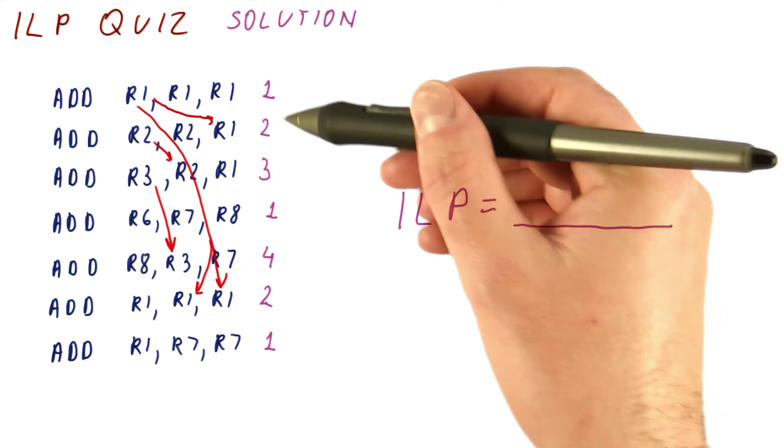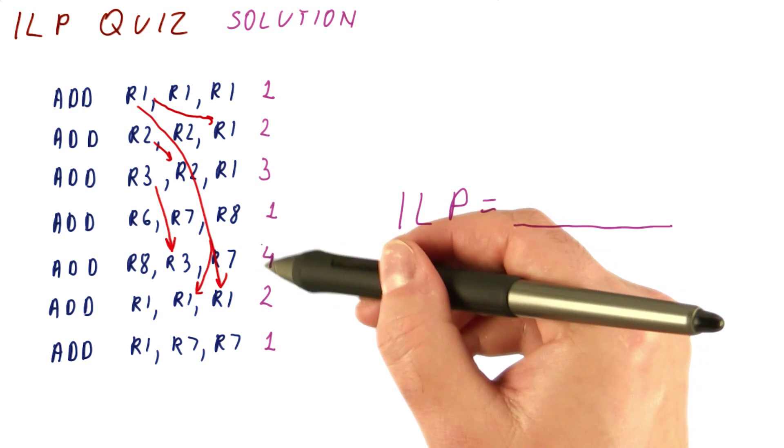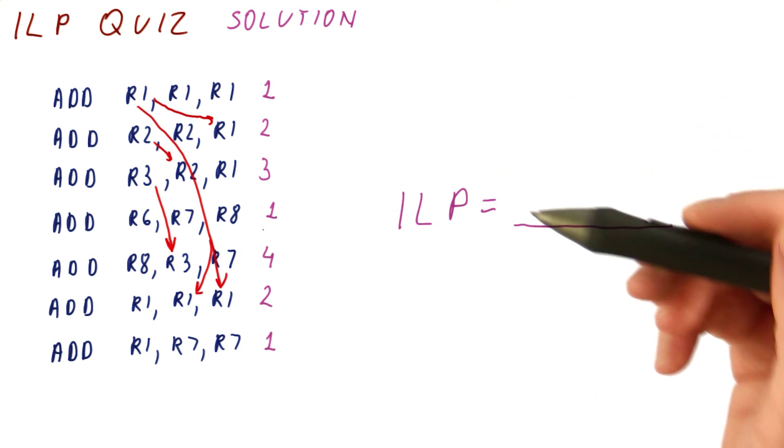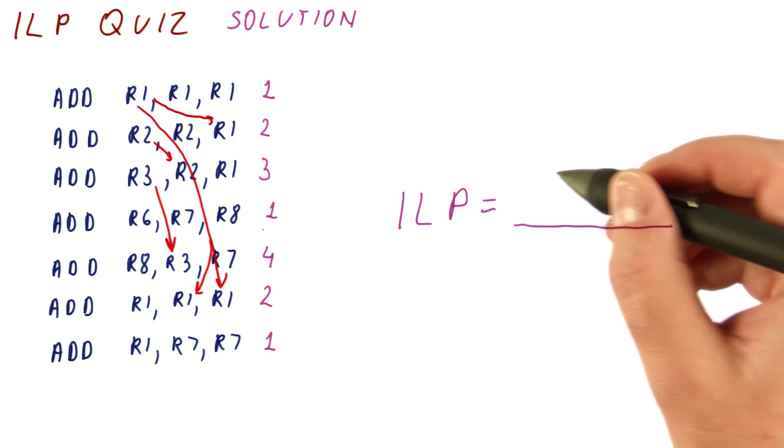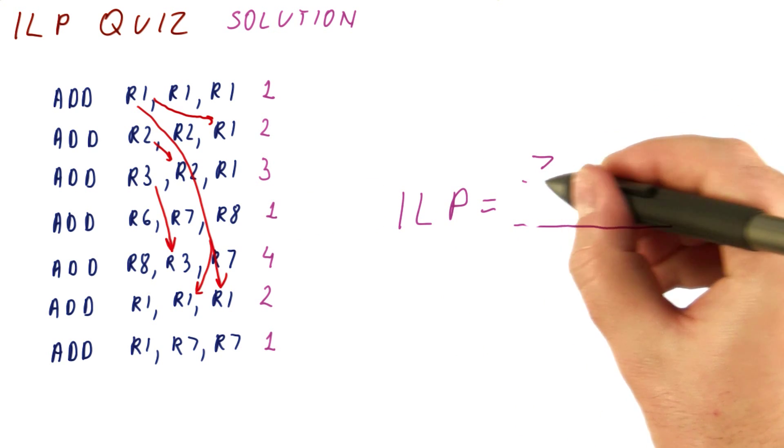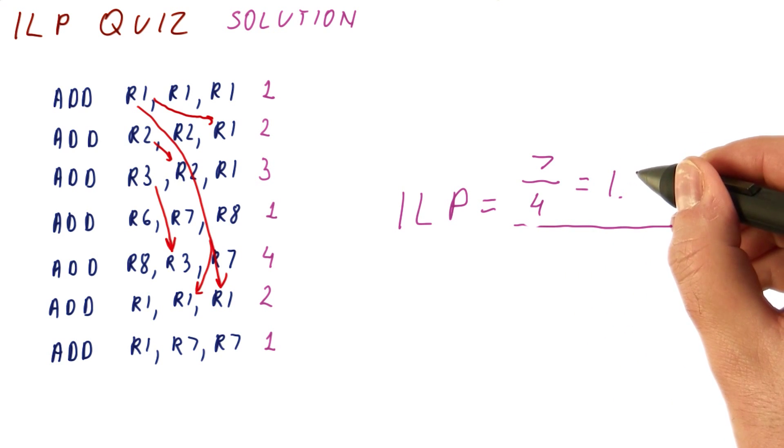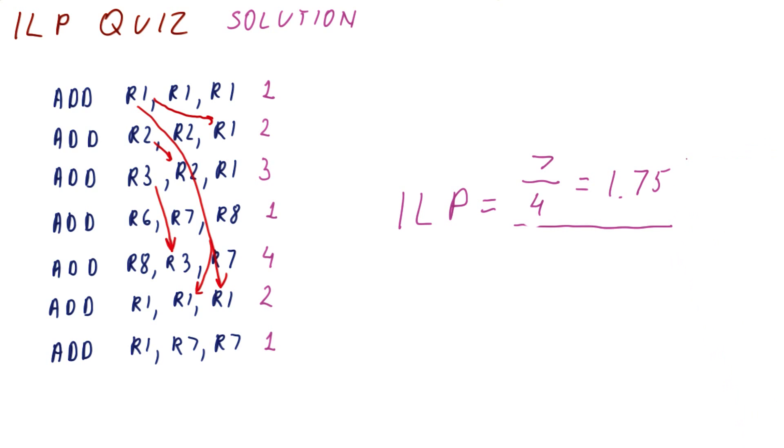So what we have is the last instruction that finishes in cycle four, and we've managed to execute seven instructions over that time. So we have seven over four, which if you want to calculate it out, is going to end up being 1.75.